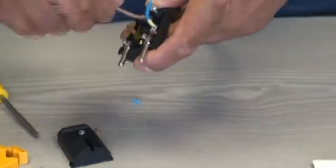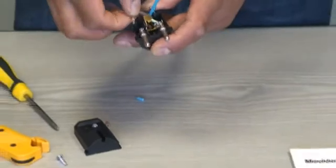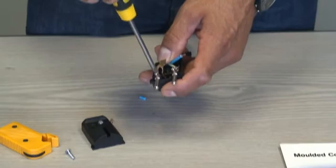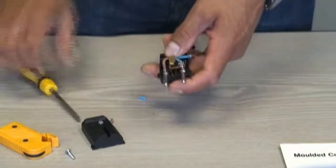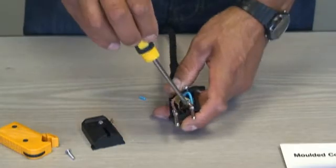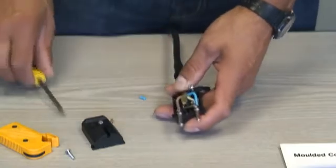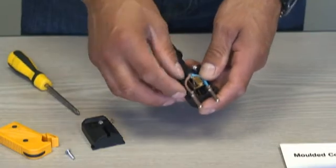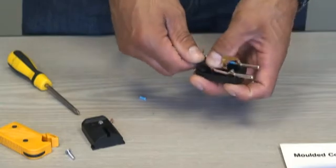Then with the other two, nice and simple, twist the ends up, post them in into the terminals and screw it up. Live in, remember live is brown. Neutral is blue. Like so. That's a good fit. You don't want any copper core exposed, you want to push it right into the PVC sheath. Nice and neat.